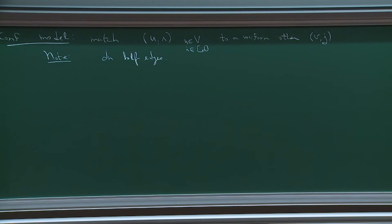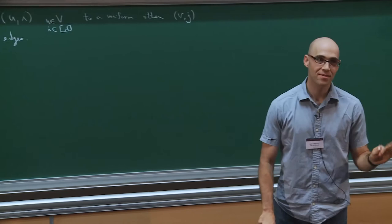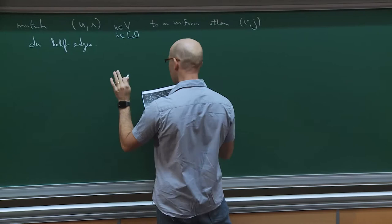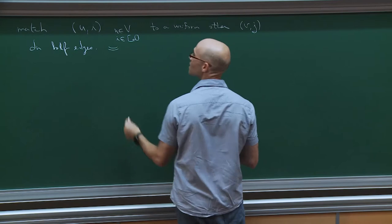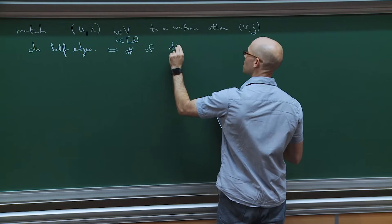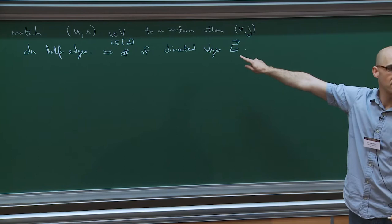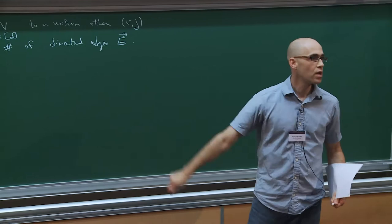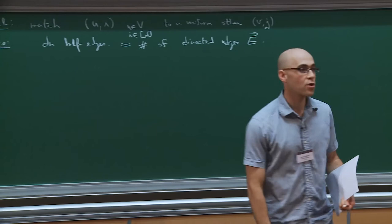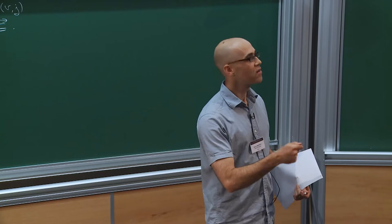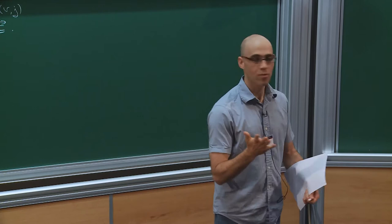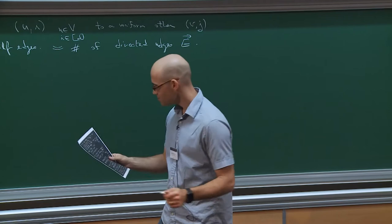This is rejection sampling: if you first see an edge that creates a double edge or self-loop, abort; otherwise continue. We have dn half edges. The number of edges is dn over 2. But notice that the number of half edges is exactly the number of directed edges — the state space of our non-backtracking random walk. So matching to a uniform half edge with probability 1 over dn is exactly the 1 over dn shooting for our uniform distribution over directed edges.